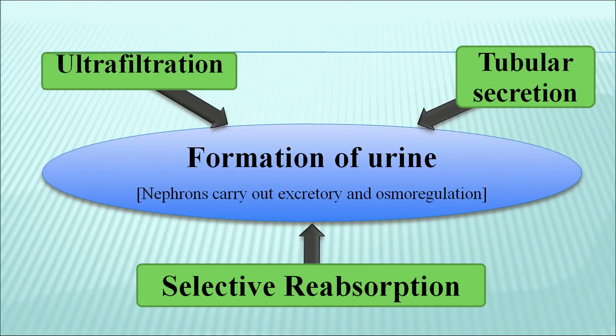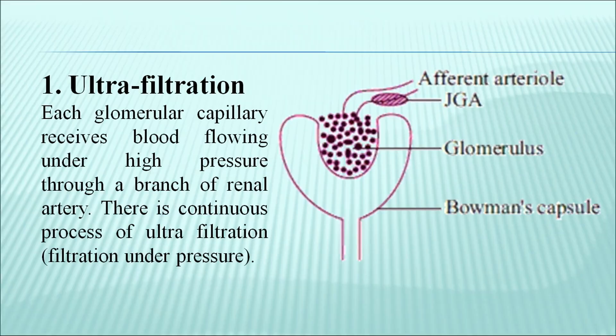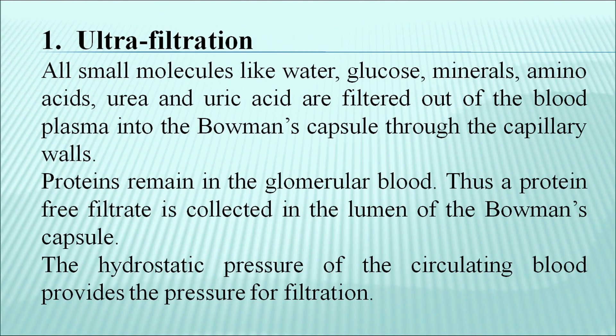The process of urine formation, which is carried out in nephrons and is also associated with osmoregulation, involves three basic steps: ultrafiltration, tubular secretion, and selective reabsorption. In ultrafiltration, each glomerulus capillary receives blood flowing under high pressure through a branch of the renal artery. There is a continuous process of ultrafiltration, which is filtration under pressure. All small molecules like water, glucose, minerals, amino acids, urea and uric acid are filtered out of the blood plasma into the Bowman's capsule through the capillary walls. Proteins remain in the glomerular blood, so a protein-free filtrate is collected in the lumen of the Bowman's capsule. The hydrostatic pressure of the circulating blood provides the necessary pressure for filtration.